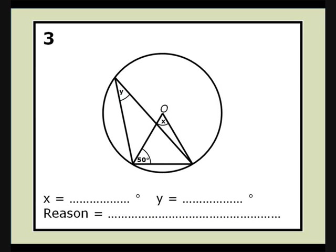Question 3. Firstly, the triangle with x and 50 is isosceles, since two of the sides are radii of the circle. Two of the angles are 50 degrees, so x is 80 degrees.